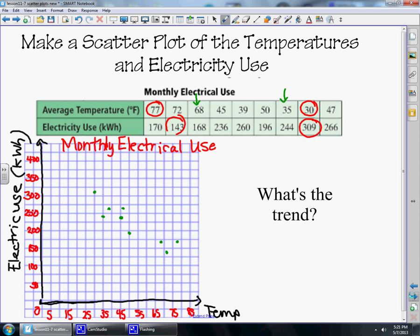So this is our scatterplot. Now the question is, what is the trend? If we were to draw a line, it looks like the points slant downward. So as the temperature increases, your monthly electrical use goes down. So there would be a negative correlation.